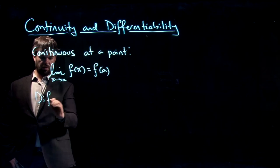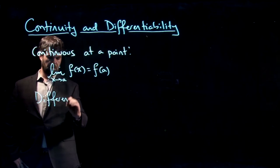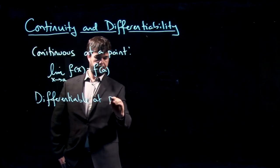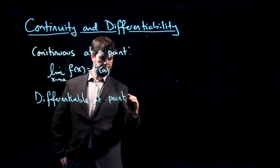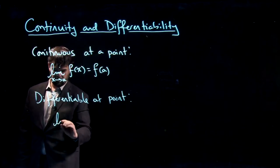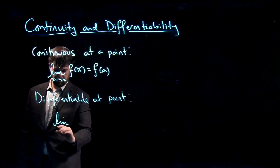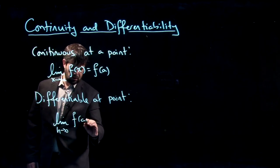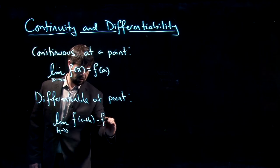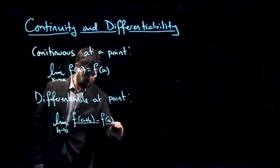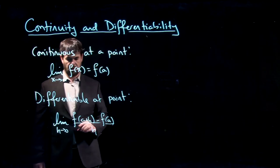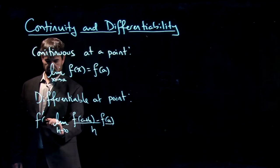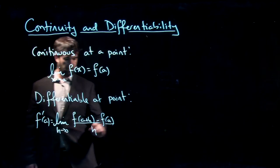And similarly, what does it mean for a function to be differentiable at a point? This is also stated in terms of a limit. So, limit as h goes to 0, f of a plus h minus f of a over h. If this limit exists, this is your derivative, f prime of a. So, this should exist.